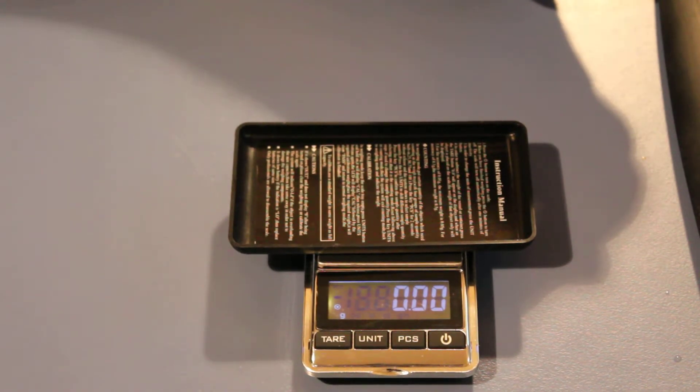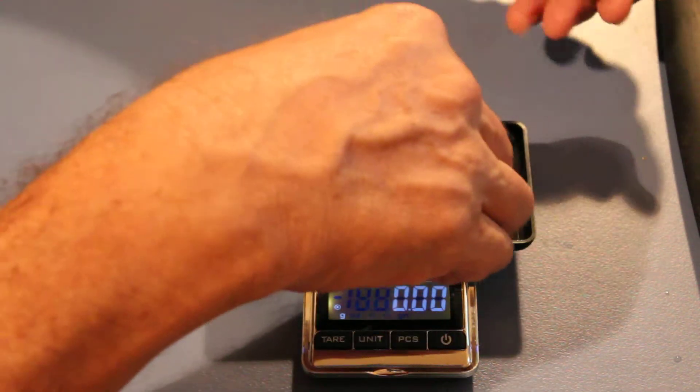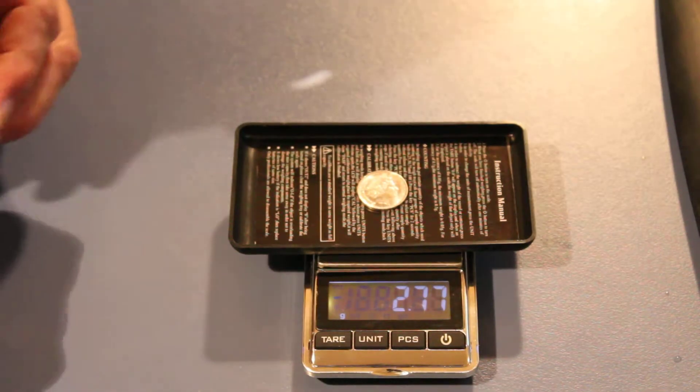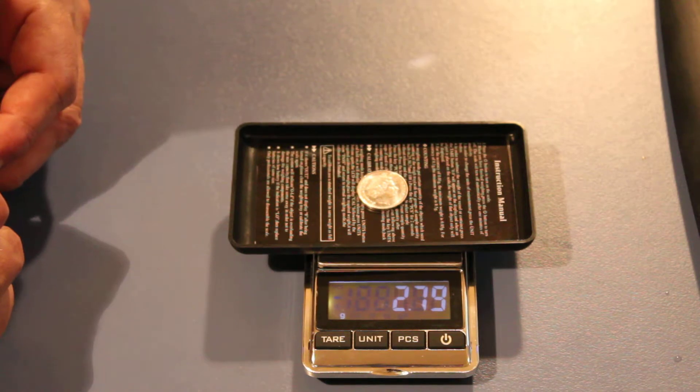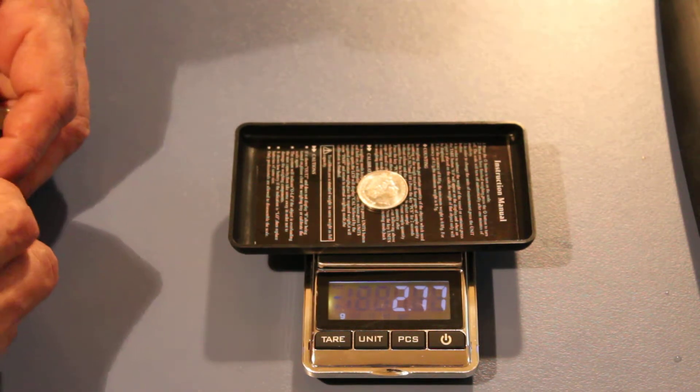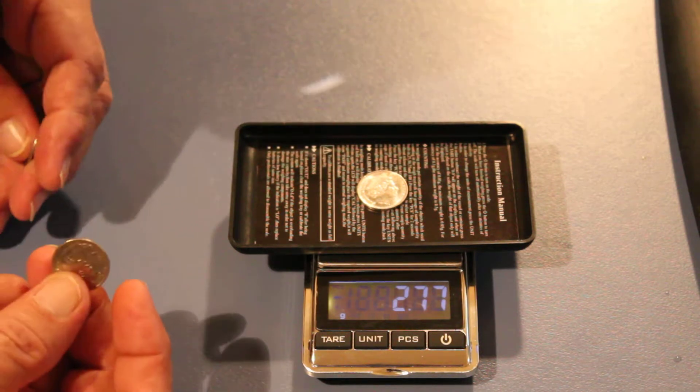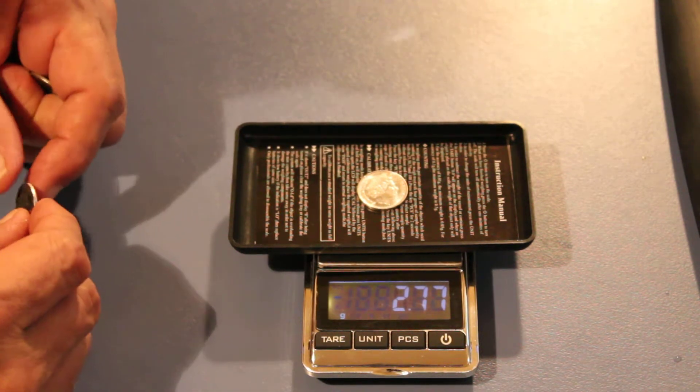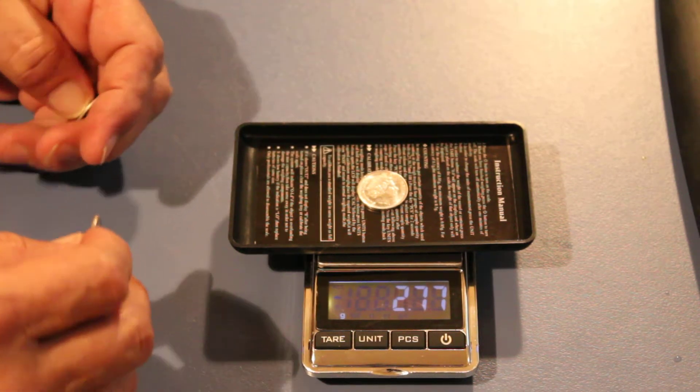And a five cent piece is 2.8 grams. That's pretty close. Now even that's what they're supposed to be, the coins probably aren't all going to be exactly spot on anyway.